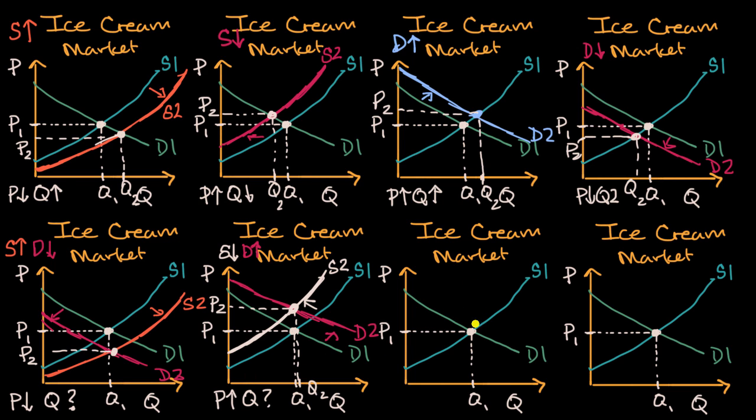Now let's go and make both of them increase. So let's say that both supply goes up and demand goes up. And demand goes up. So supply going up, the curve would shift to the right and down. So that's supply two.